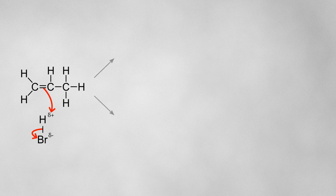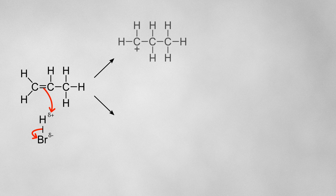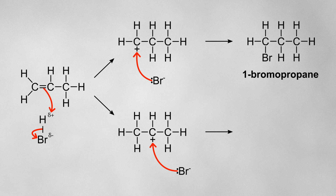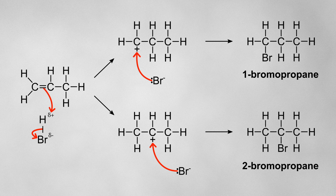However, there are now two possibilities for where the carbocation will form, depending on which carbon atom the hydrogen forms a bond with. Either the carbocation can form on the terminal carbon, or it can form on the central carbon. In either case, the lone pair on the bromide ion will be attracted towards the carbocation to form a new bond. This will leave us with either 1-bromopropane or 2-bromopropane.